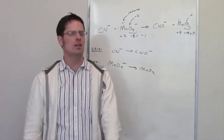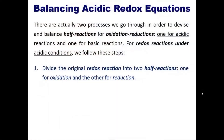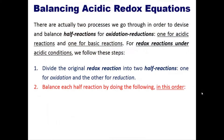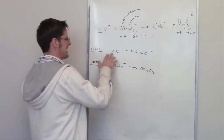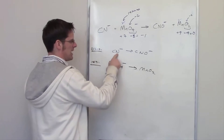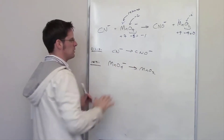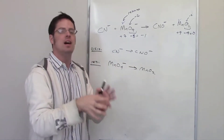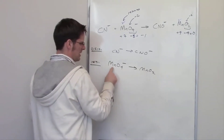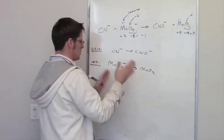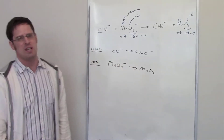Now step two says balance each half reaction in the following order. First, balance elements other than hydrogen and oxygen. Looking at the oxidation half reaction, I've got carbon and nitrogen — they're balanced. Looking at the manganese half reaction, I've got one manganese on each side — balanced. So that step is done.